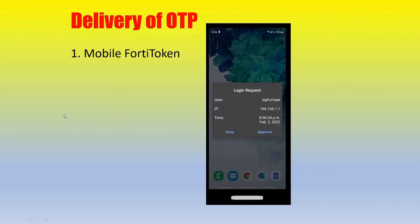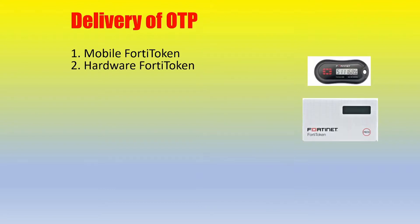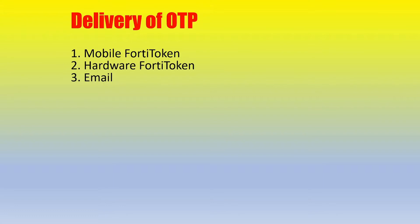There are a few different methods for an end user to receive a one-time password or token. The first option is the FortiToken mobile application, where users receive either a six-digit unique ID that changes every 60 seconds, or a push notification. The second option is a hardware FortiToken, which comes in a keychain or credit card form factor. Additionally, the one-time password can be sent via email or SMS.